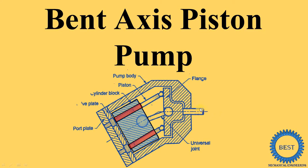But in this case, here you see this is the shaft and this is the axis of the shaft. And here you see these cylinders are inclined at certain angles and this is the axis of the cylinders. These axes are not the same — these axes are different. That's why it is called the bent axis piston pump.